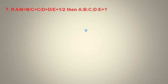Next, question number 7: a/b is equals to b/c is equals to c/d is equals to d/e is equals to 1/2. Then what is a is to b is to c is to d is to e?